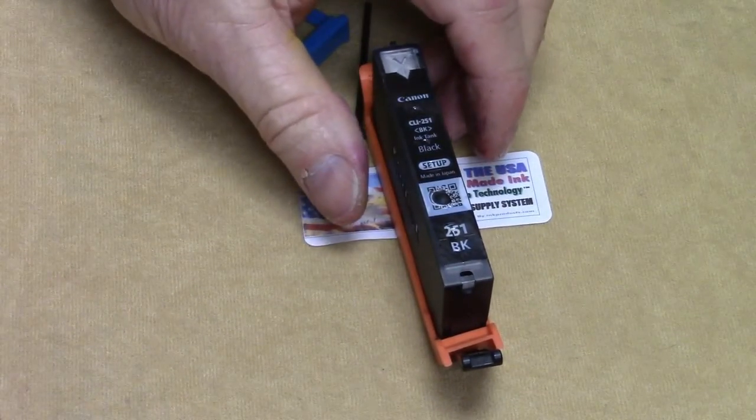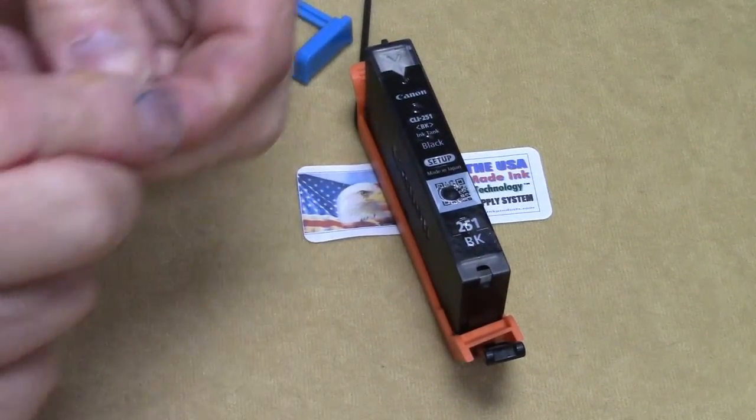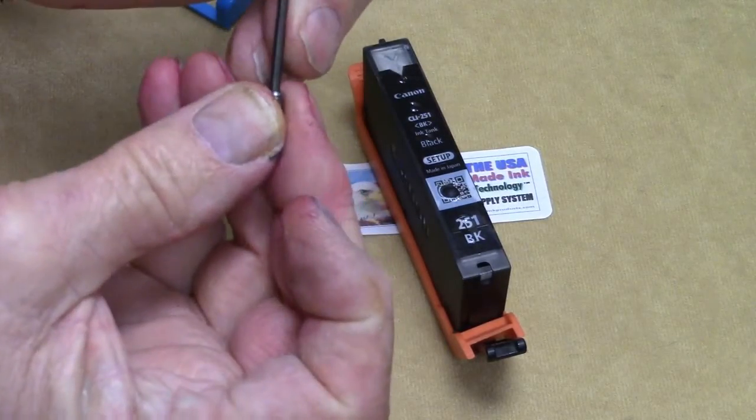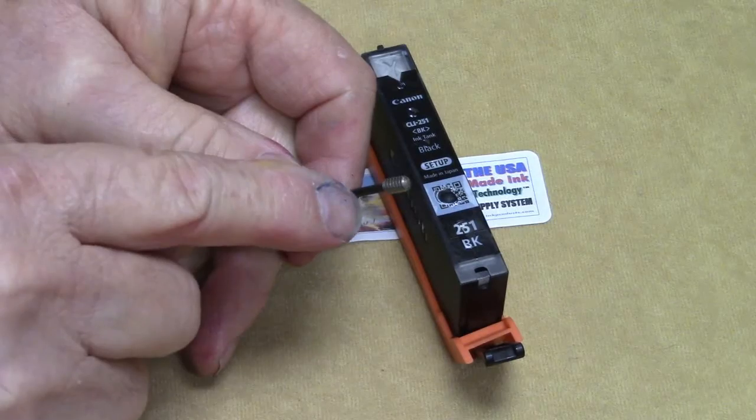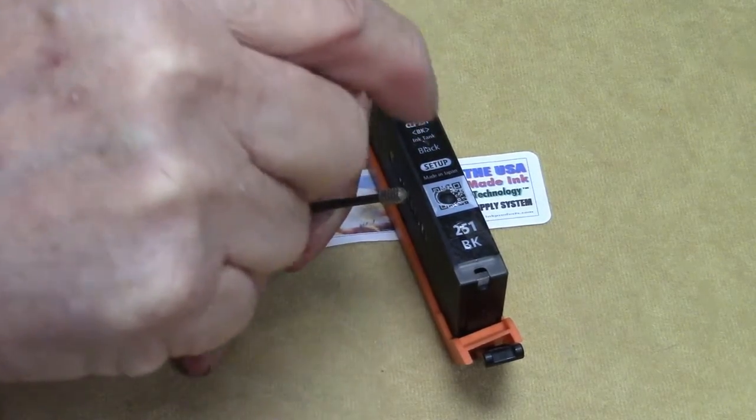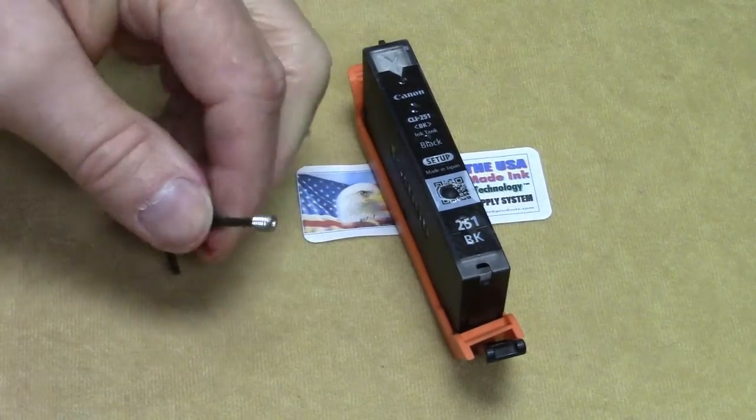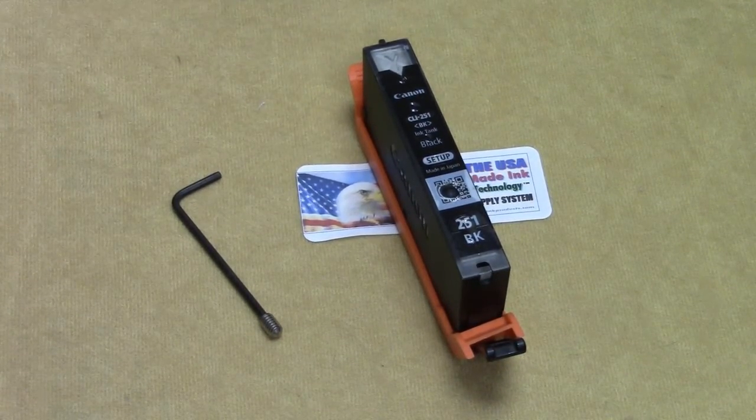Now what we're going to do is take out that sealing ball, because I'm going to use a little 932 Allen screw to reseal that fill hole back up again. The reason why I'm going to do that is because if you try to put a plug in there and it sticks up too high, it hits the printer and it can damage the cartridge or the printer going back and forth.